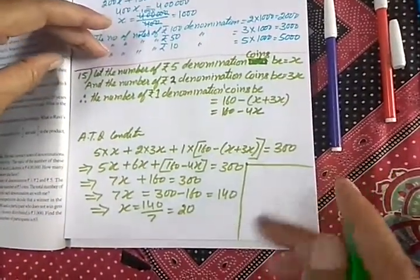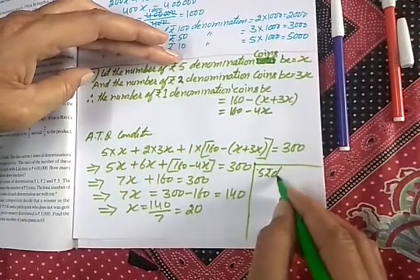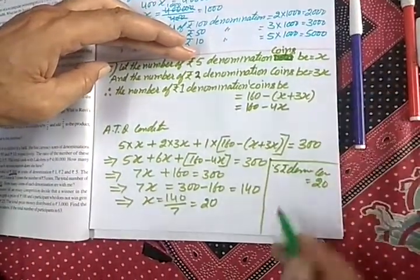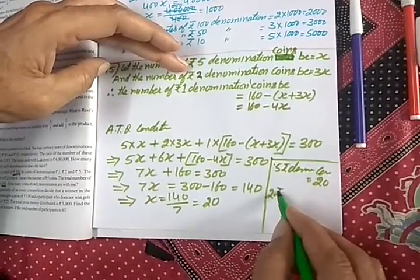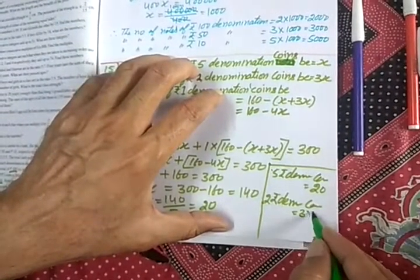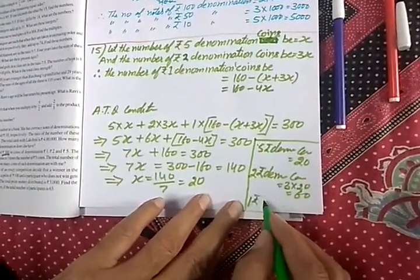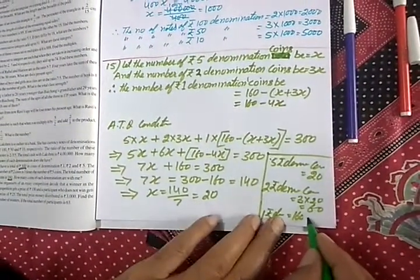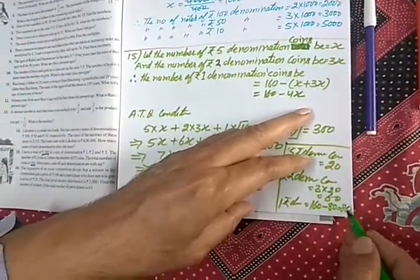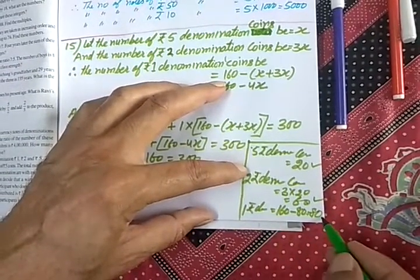So the number of ₹5 denomination coins will be 20, because x equals 20. The ₹2 denomination coins will be 3 times of it, that is 3 into 20, which gives you 60. And the ₹1 denomination coins will be 160 minus (60 plus 20), which is 80. So you have ₹5 coins = 20, ₹2 coins = 60, and ₹1 coins = 80.